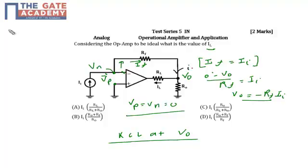One is my II current which is incoming, IL, and one is the current in the resistance R0, named this current as I0. If you apply KCL, the sum of the incoming current is equal to the sum of outgoing current. So your incoming current is II and that II will be equal to the outgoing current IL plus I0.